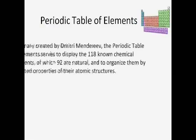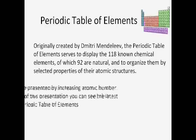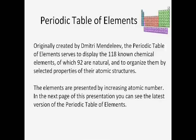The Periodic Table of Elements. Originally created by Dimitri Mendeleev, the Periodic Table of Elements serves to display the 118 known chemical elements, of which 92 are natural, and to organize them by selected properties of their atomic structures. The elements are presented by increasing atomic number. In the next page of this presentation, you can see the latest version of the Periodic Table of Elements.